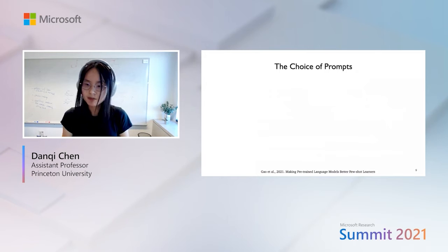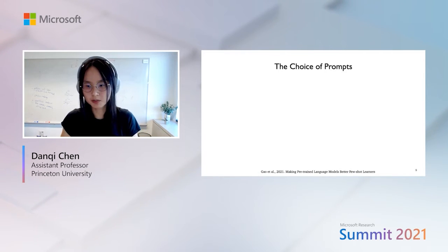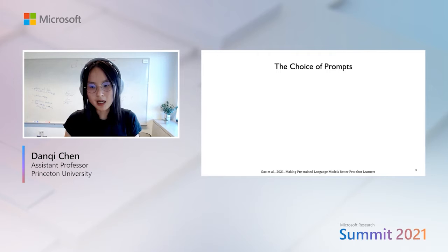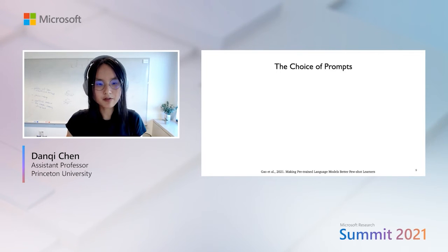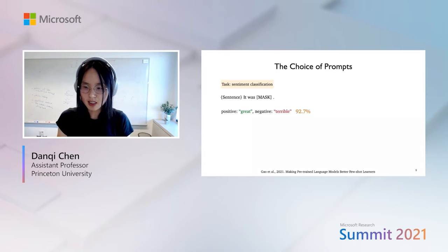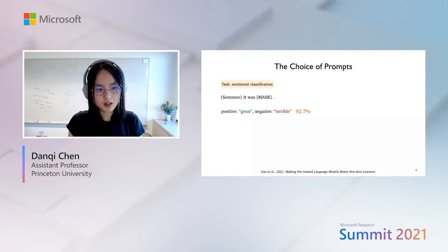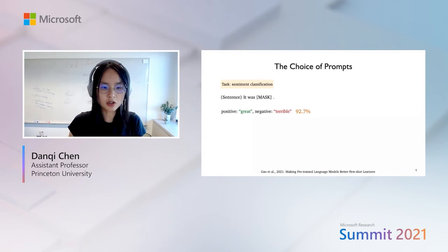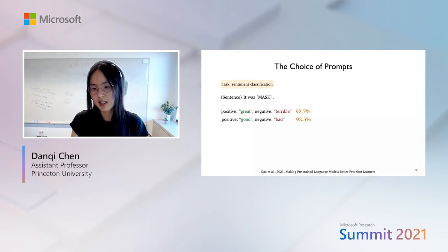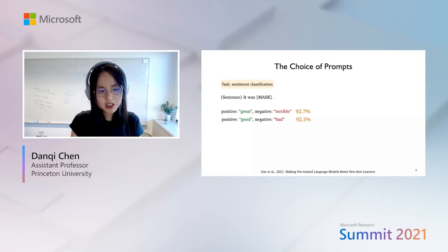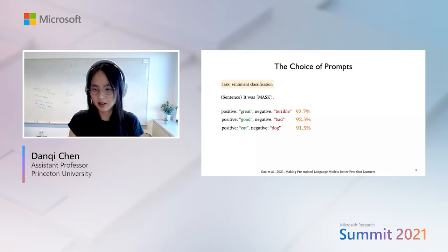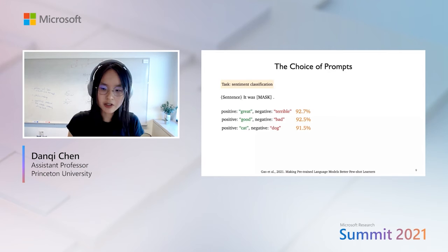Prompts are powerful, but how do we choose them? We found from pilot experiments that the choice of prompts is actually very important. Using the template "[input] it was [MASK]" with "great" as positive and "terrible" as negative achieves 92.7% accuracy. Changing to "good" and "bad" drops the accuracy a little. And changing to random words like "cat" and "dog" drops it further.